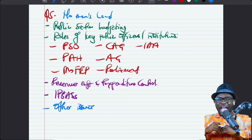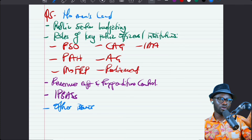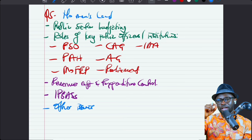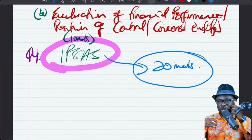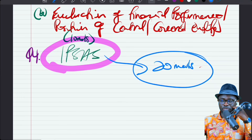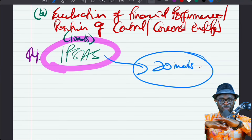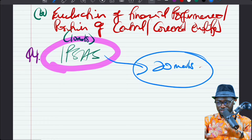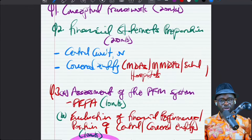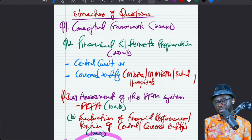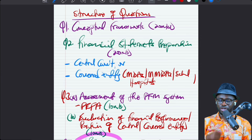Everything you need is already available on the portal — about 90% of it, especially under the summary videos. The only 10% not yet available is part of the IPSAS, since not all standards have been treated in the summary videos. So make sure you leverage on the portal. This is the scope of your syllabus and the way your questions are going to be structured in the exam hall for public sector accounting and finance.